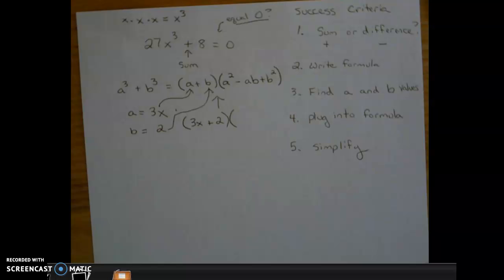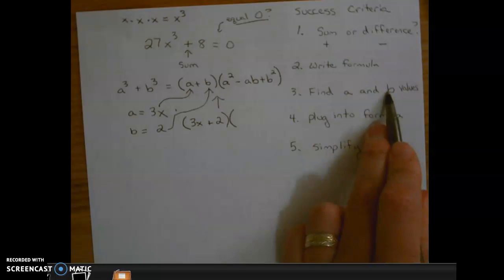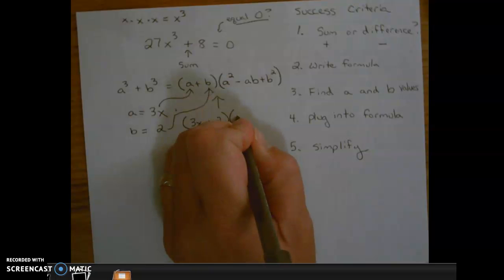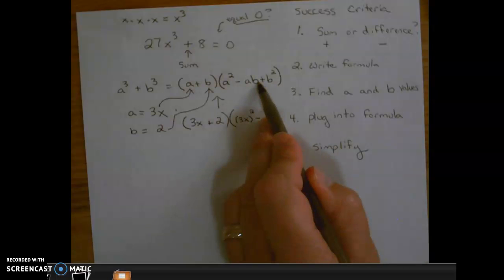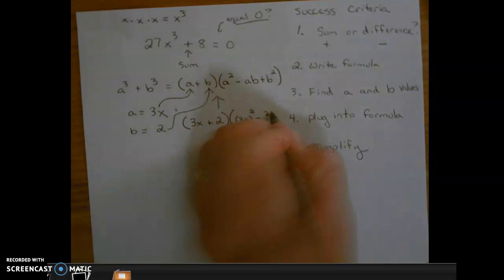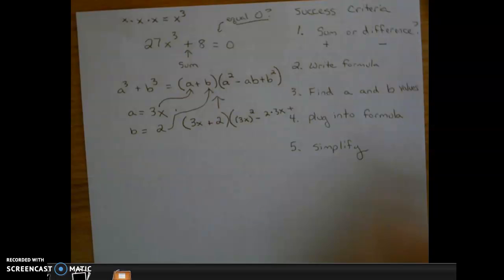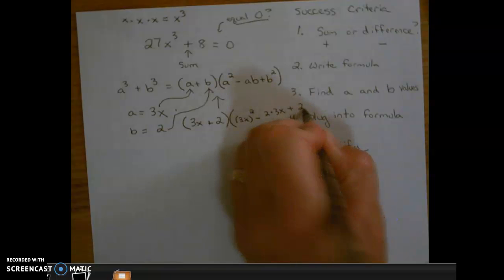Second factor, we do the same thing. We're plugging it into the formula, plugging in a and b. So 3x goes in for a, we're going to have (3x)². Minus a times b, so that's going to be 2 × 3x. Plus comes down, plugging in b. So b, which is 2, 2² .